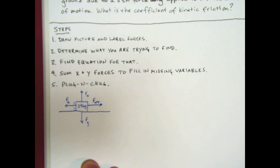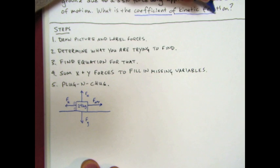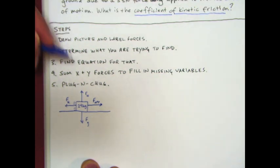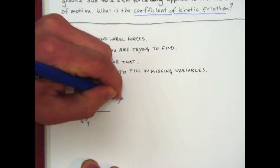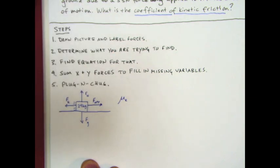Now we want to determine what we're trying to find. What is this problem asking us for? The problem is asking what is the coefficient of kinetic friction. That is the Greek letter μk, and remember that the coefficient of friction is a property that exists between two different surfaces and it tells you about those surfaces.